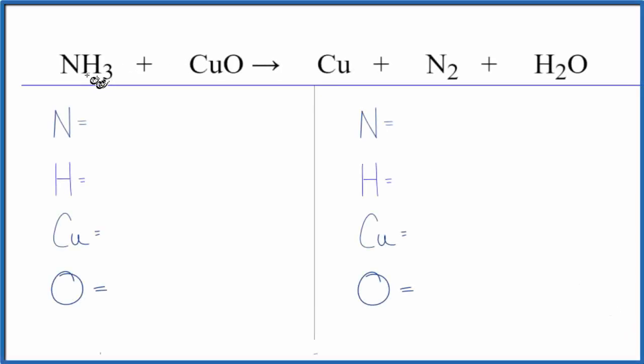In this video, we'll balance the equation for NH3 plus CuO. This is ammonia plus copper 2 oxide. Let's count the atoms up and balance the equation.